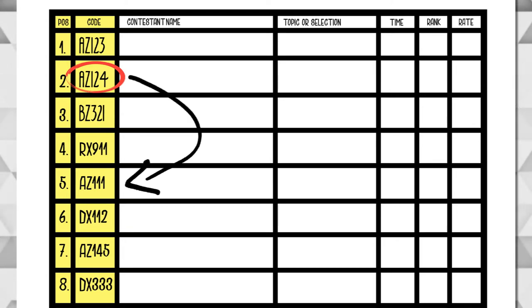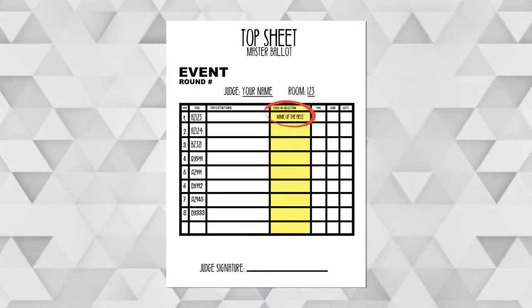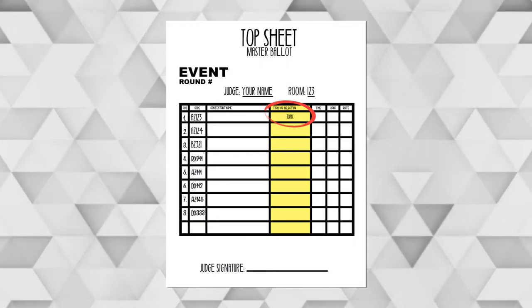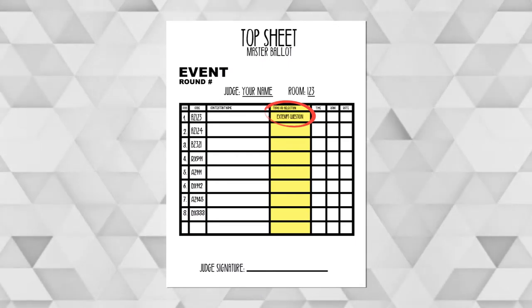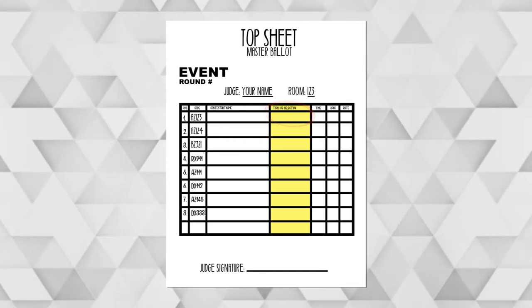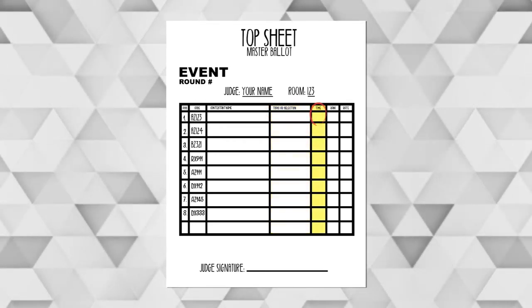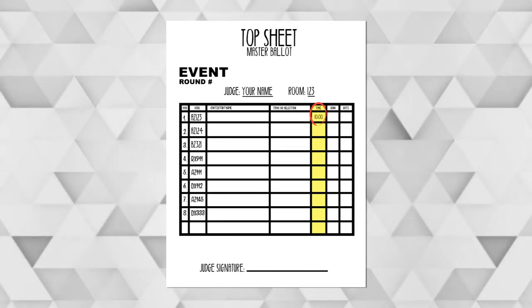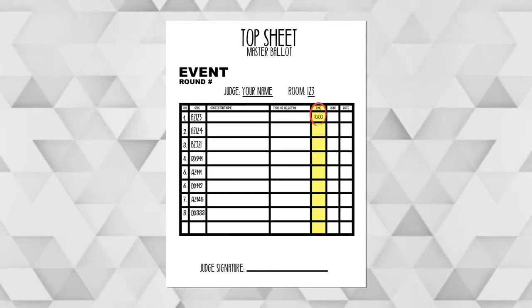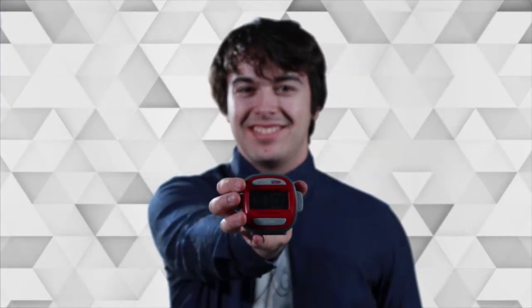Allow the double-entered contestant to perform when they arrive. The third column on your ballot sheet is where you should record the name of the piece, speech, topic, or extent question. This will help you remember who was who when determining your rankings. In the next column, you will write the time of their performance. Competitors will time themselves for you.